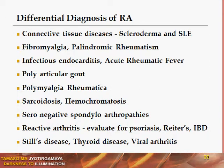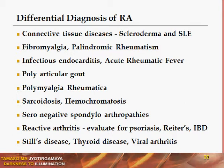What are the conditions which mimic rheumatoid arthritis — the differential diagnosis of rheumatoid arthritis? Connective tissue disorders like scleroderma and systemic lupus erythematosus, fibromyalgia, palindromic rheumatism, infective endocarditis, acute rheumatic fever, polyarticular gout, polymyalgia rheumatica, sarcoidosis, hemochromatosis, seronegative spondyloarthropathies, reactive arthritis — in which we evaluate for psoriasis, Reiter's syndrome, and inflammatory bowel disease — Still's disease, thyroid diseases, and viral arthritis.